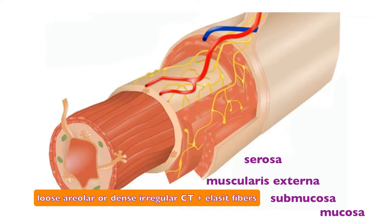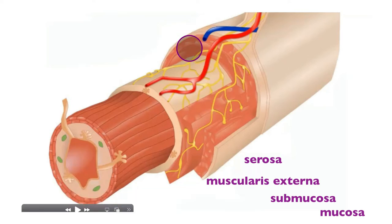The elastic fibers in the submucosa play an important role: the digestive tract expands when the bolus or chyme passes through, and once stretched and the contents move downstream, the canal returns to its original shape. The property of elasticity is not necessarily to stretch, but to return to its original shape after having been stretched.